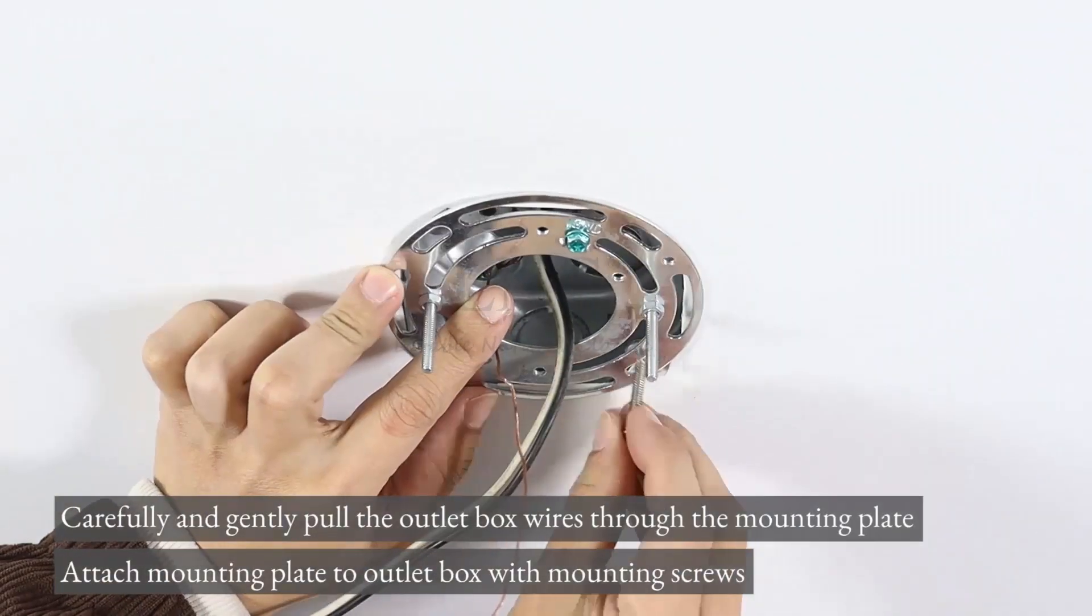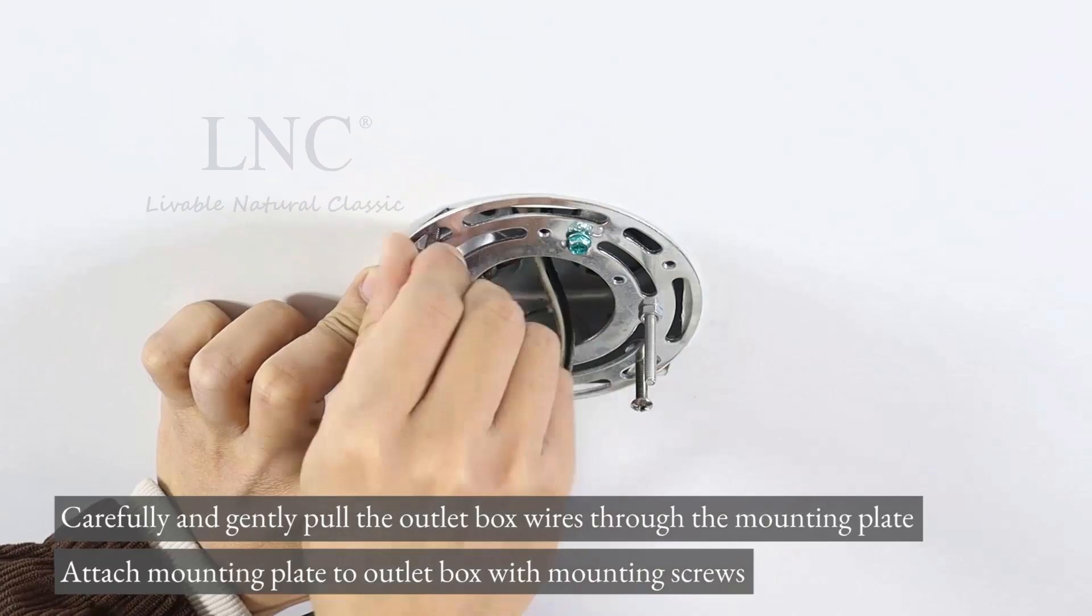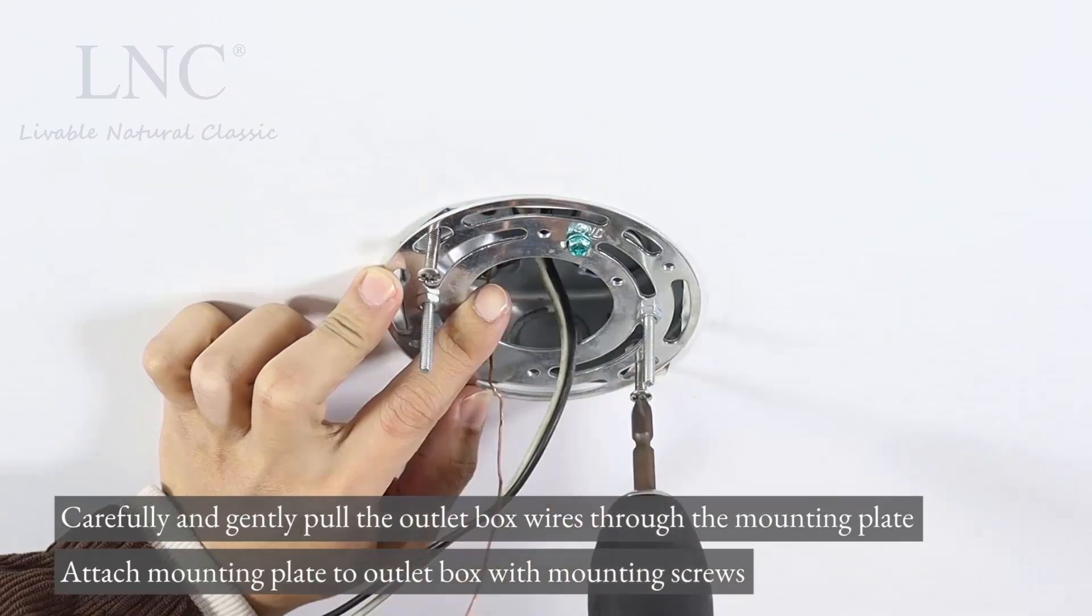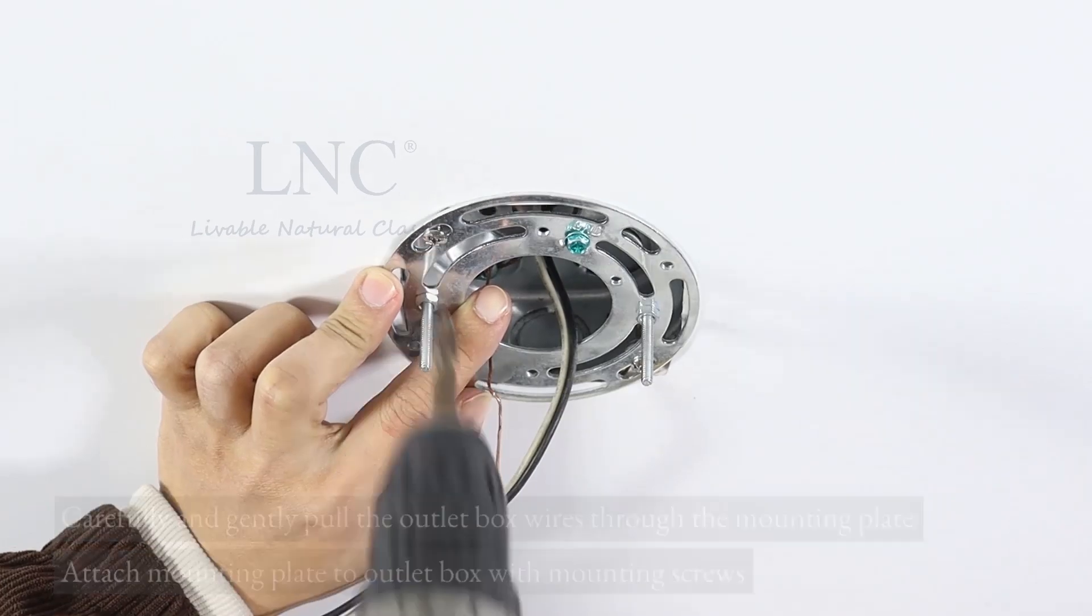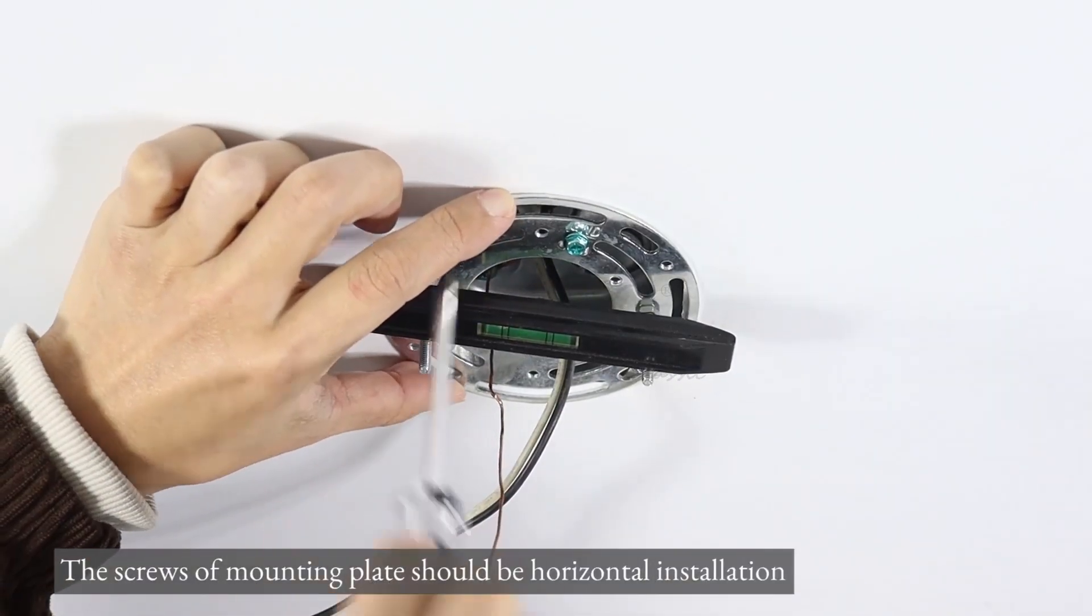Carefully and gently pull the outlet box wires through the mounting plate. Attach mounting plate to outlet box with mounting screws. The screws of mounting plate should be horizontal installation.